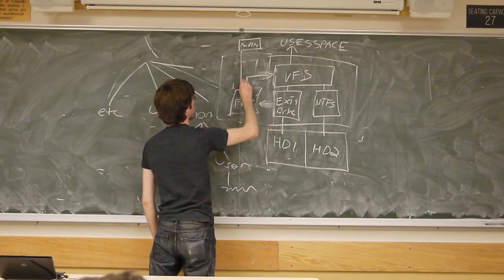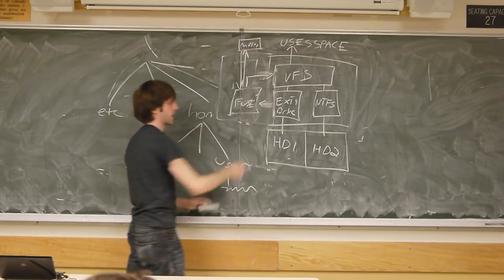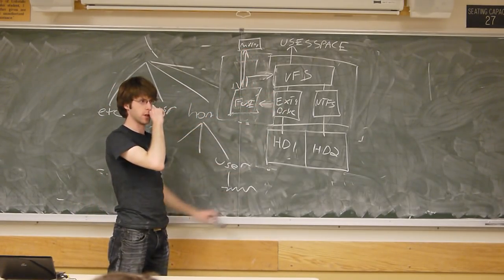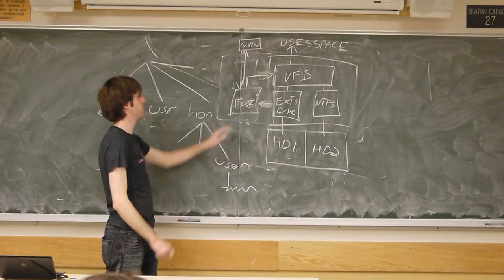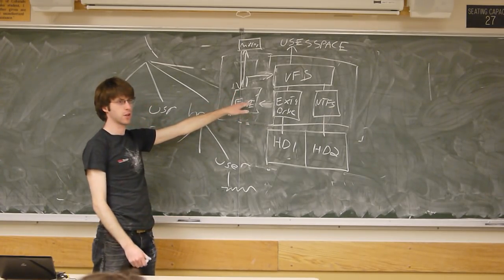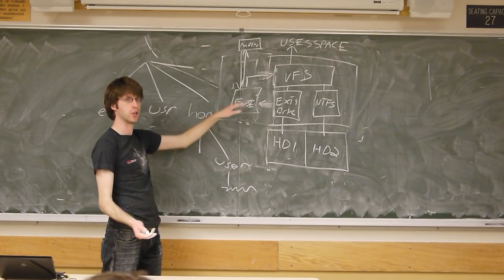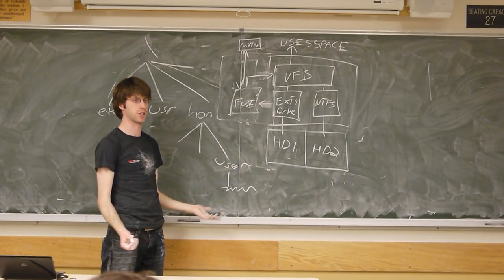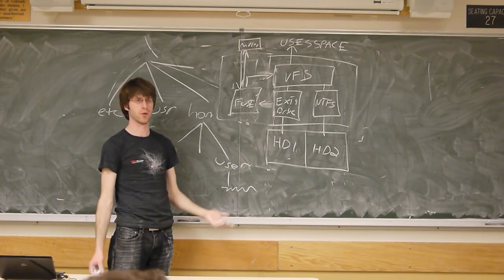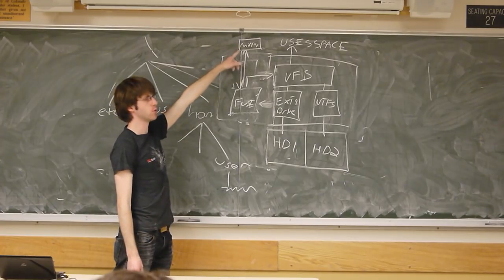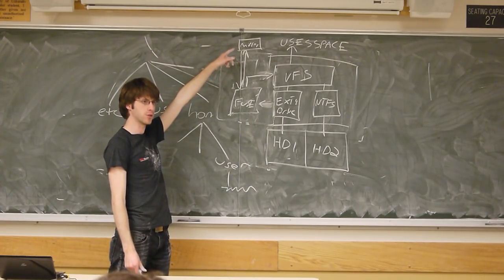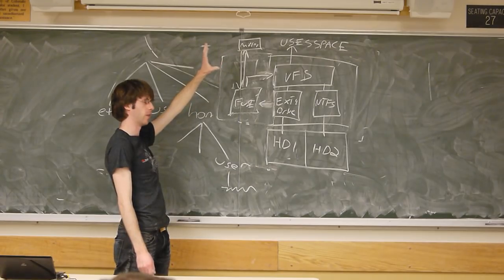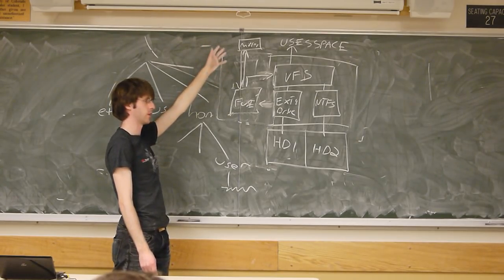Your mirror file system talks back and forth to the FUSE kernel module, which actually handles all this low-level stuff. The advantage to this is if you're writing something in the kernel, you're pretty limited on what you can use — you can't really use any of these big application-level libraries. Whereas if you can implement it up in user space, you can get access to a lot of nice, high-level libraries.